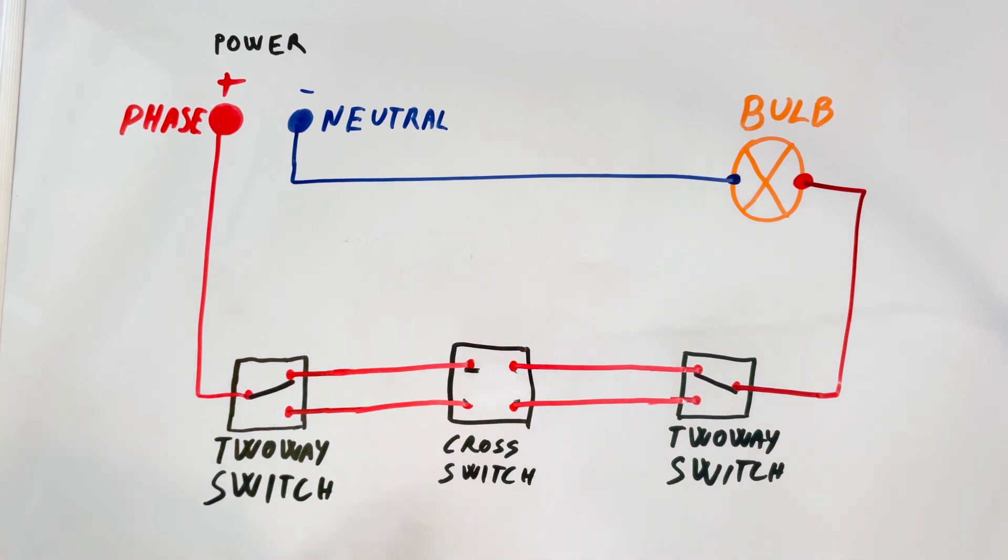You can see that toggling any switch will either close or open the circuit, controlling the light accordingly.